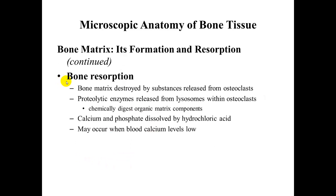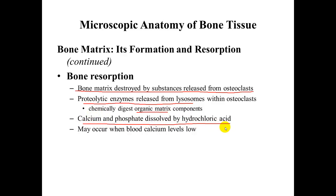In bone resorption, we are breaking down bone to pull the minerals back out. The bone matrix is destroyed by substances released from the osteoclasts — remember, clasts cleave bone. Proteolytic enzymes released from the lysosomes break down the organic osteoid, and hydrochloric acid dissolves the calcium and phosphate, pulling those minerals out of the bone. This typically occurs when blood calcium levels are low.